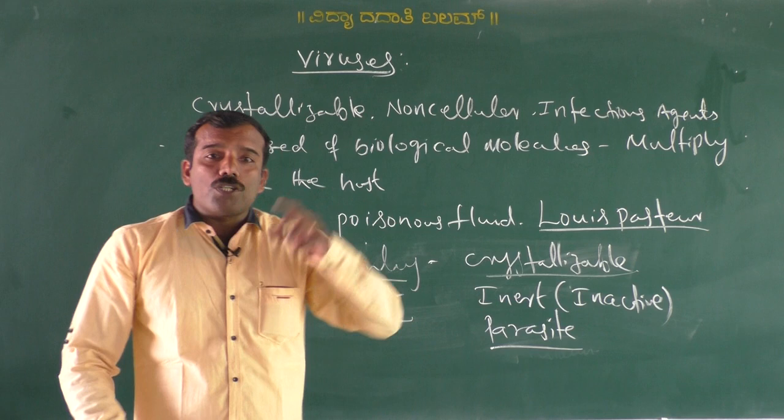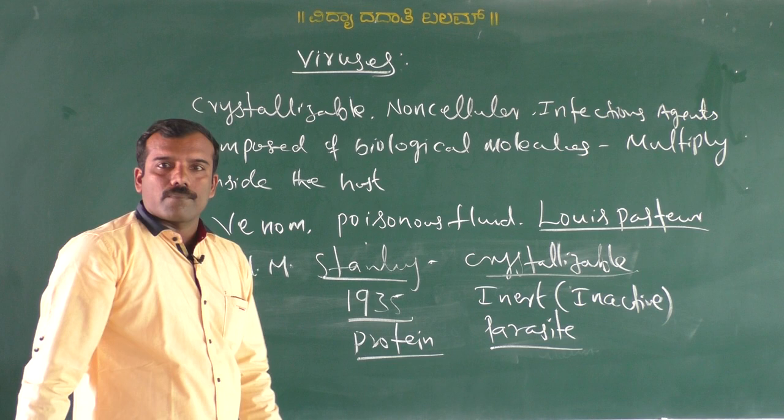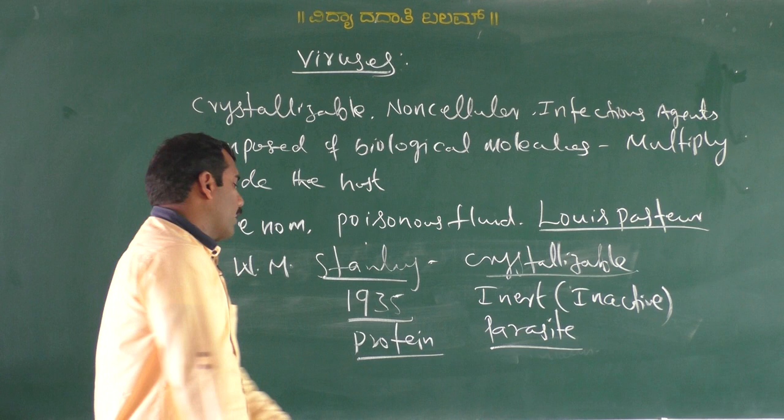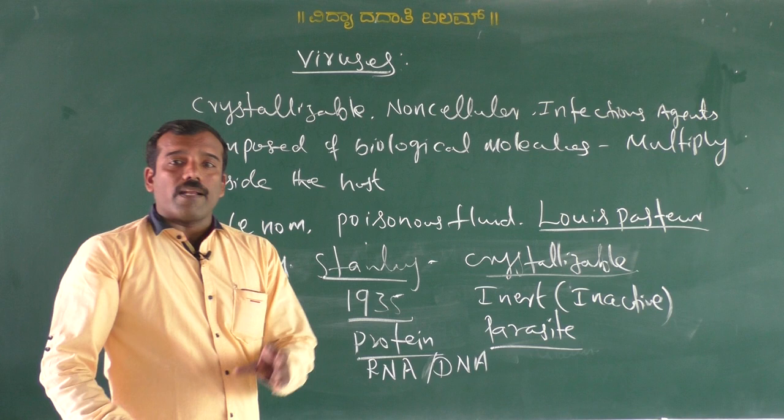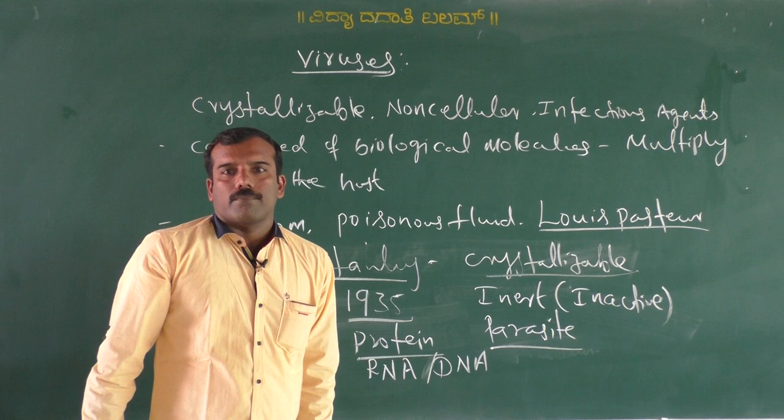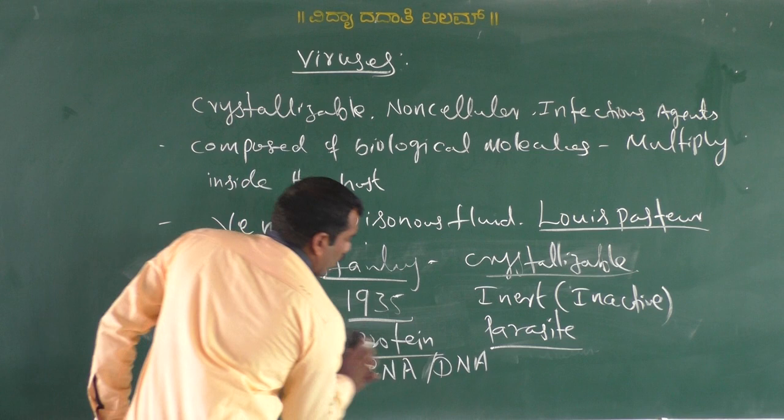Stanley also explained that the major portion of the virus is made up of protein, and it also contains a nucleic acid — either RNA or DNA. Virus contains either RNA as genetic material or DNA as genetic material, never both. That is the brief history of viruses.